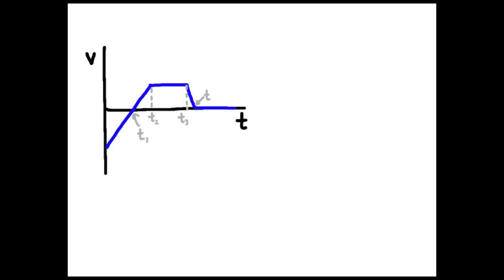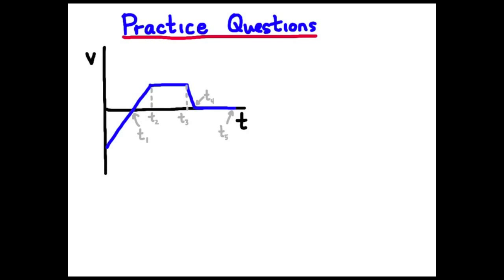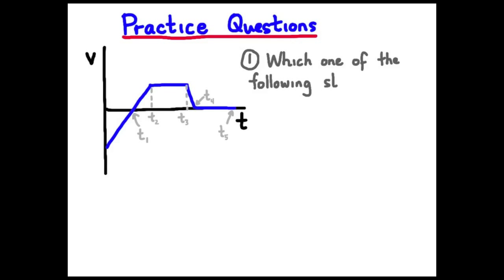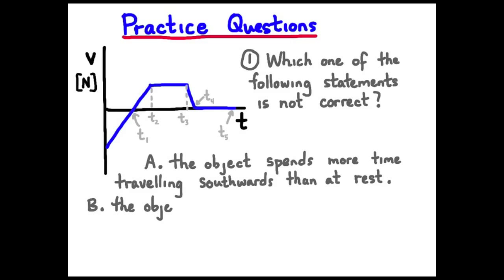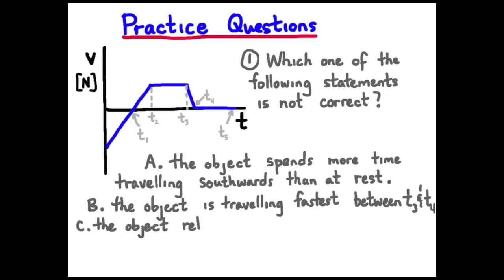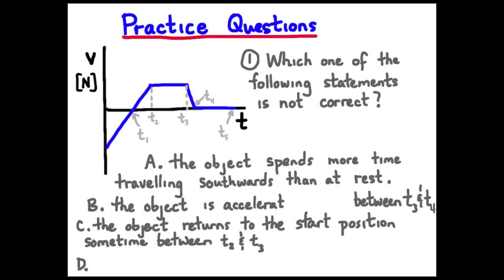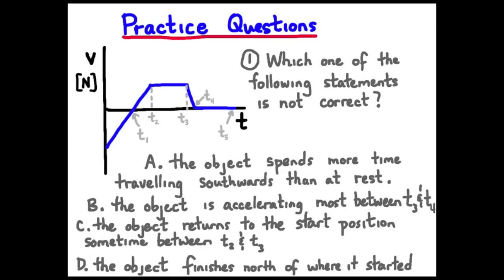Let's try a practice question — be prepared to pause and try it. We are given a velocity-time graph for an object. The question is: which one of the following statements is not correct? Positive direction is north, negative is south. Options: A — the object spends more time traveling southwards than at rest; B — the object is accelerating most between time interval 3 and 4; C — the object returns to the start position somewhere between T2 and T3; D — the object finishes north of where it started. Pause and try the question.